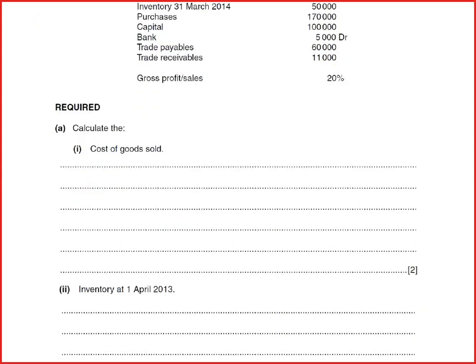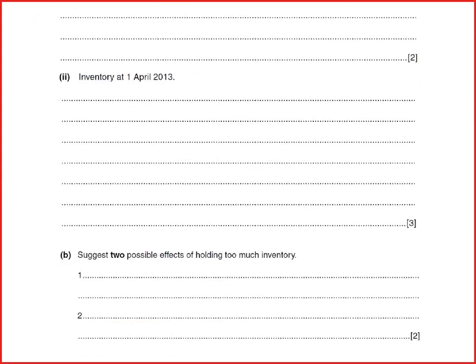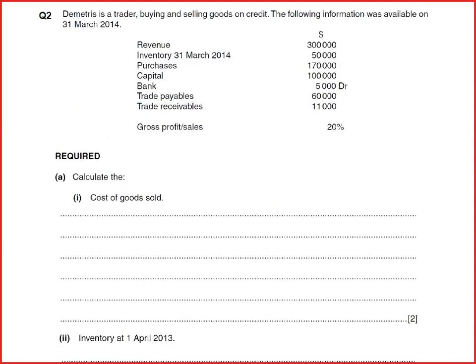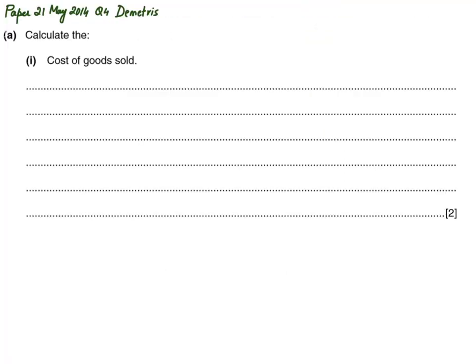The first requirement is to calculate cost of sales, then calculate opening inventory. There are also some theoretical requirements. Now, to calculate cost of sales, the method we normally use is: opening inventory plus purchases less closing inventory equals cost of sales. The problem here is that there is no opening inventory given, so we cannot find cost of sales directly.